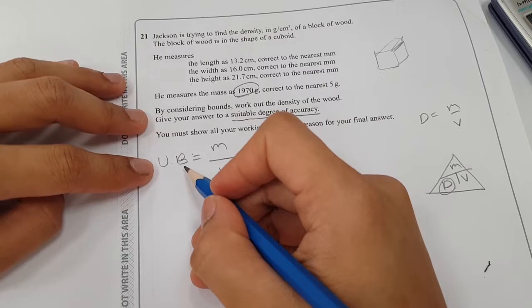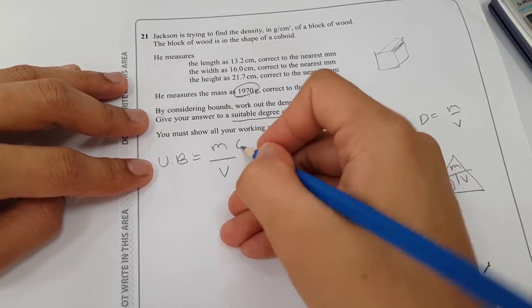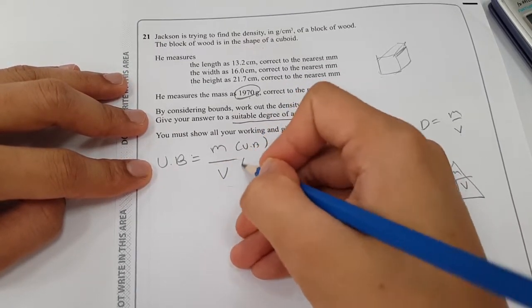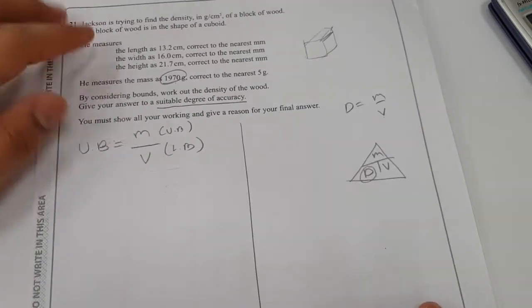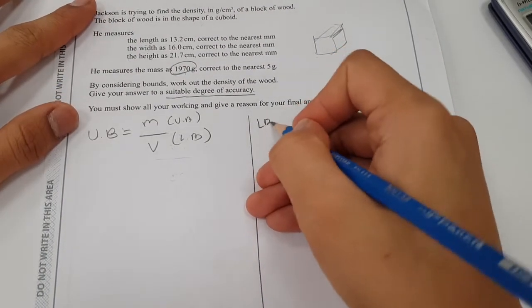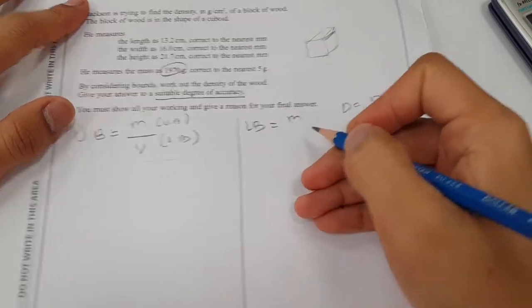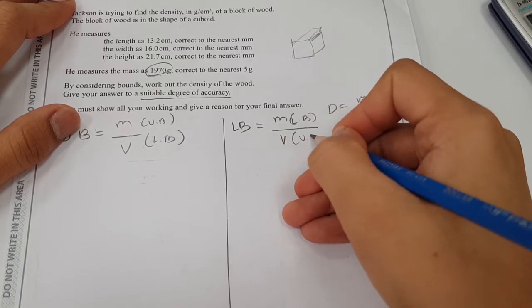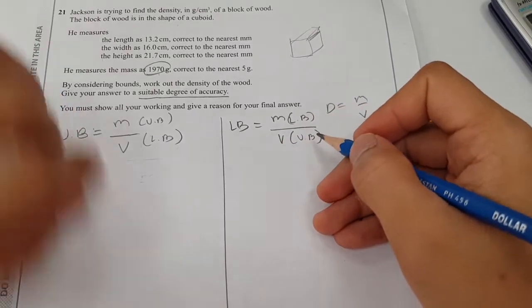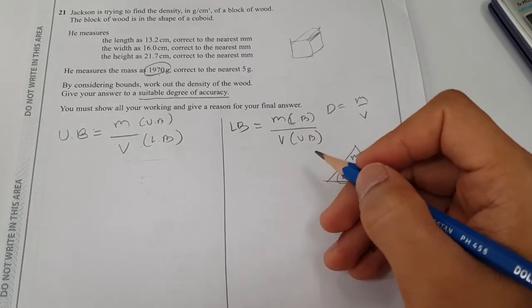Since you need the highest possible value, the top part must be upper bound, while the lower part would be the lower bound. And if you want the lower bound, the mass would be the lower bound, and the volume must be the upper bound, in order to get the smallest possible density.